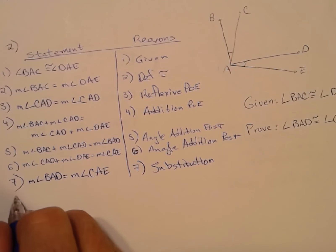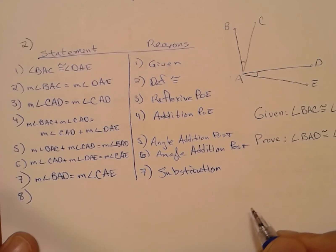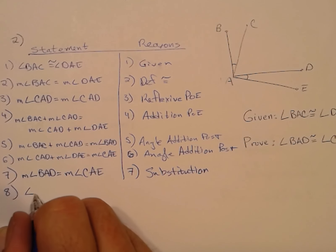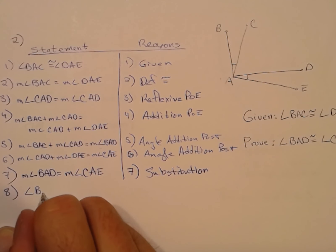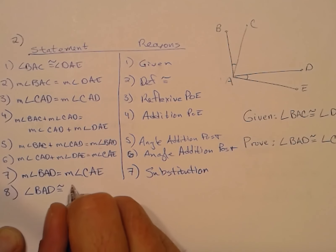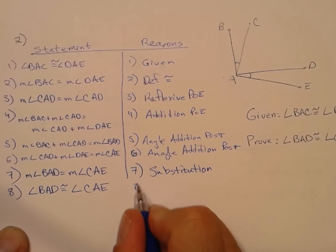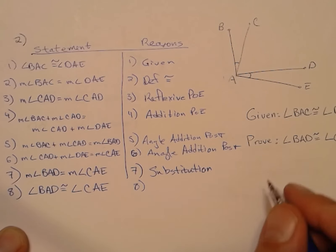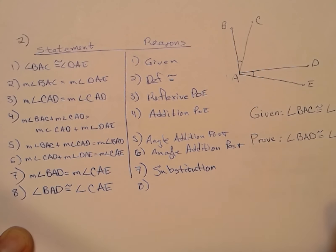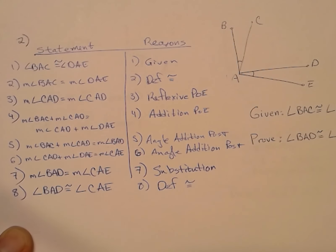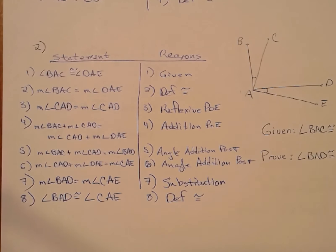We're trying to prove some congruence, but that's not a big deal. We'll just drop in the definition of congruence: measure of angle BAD turns into angle BAD congruent to angle CAE. Please be aware of the difference between congruence and equality. Cite definition of congruence whenever converting between an equation and a congruence statement.